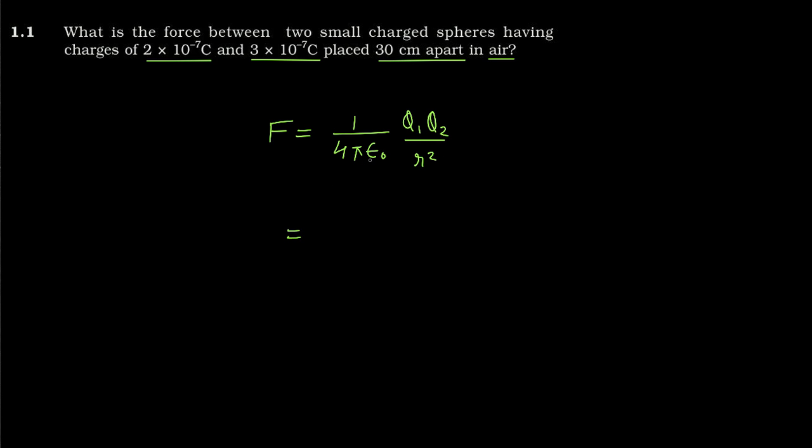सारी value put करते हैं. Air में है, Air या vacuum में जो value होती है 9 × 10^9 होती है. Q1 कितना है: 2 × 10^-7 coulomb. Q2 कितना है: 3 × 10^-7 coulomb.